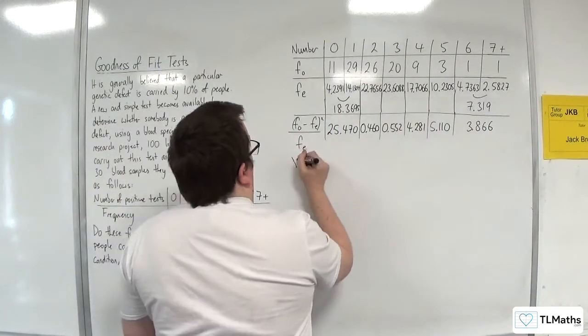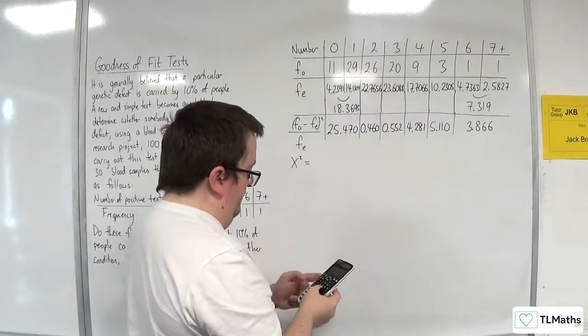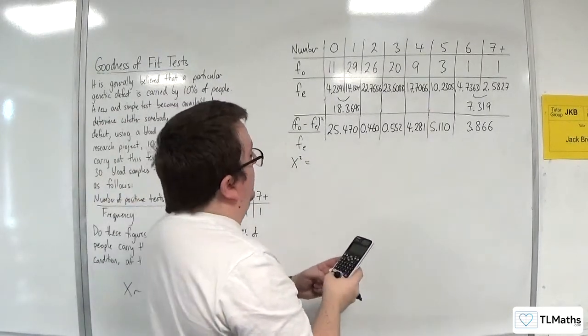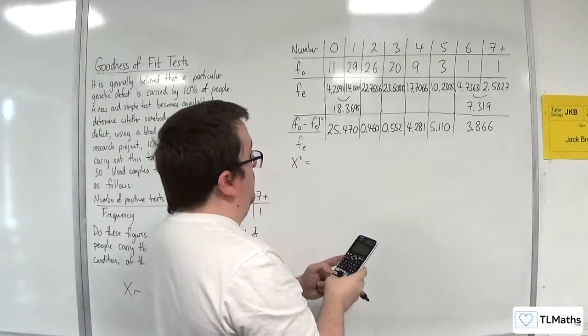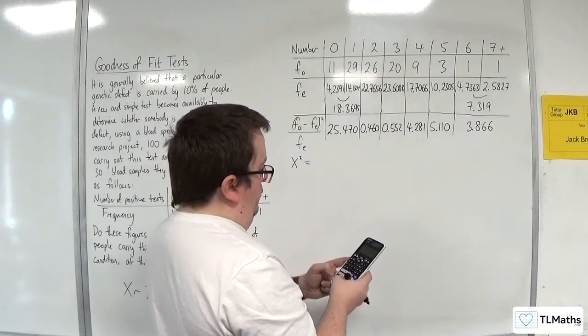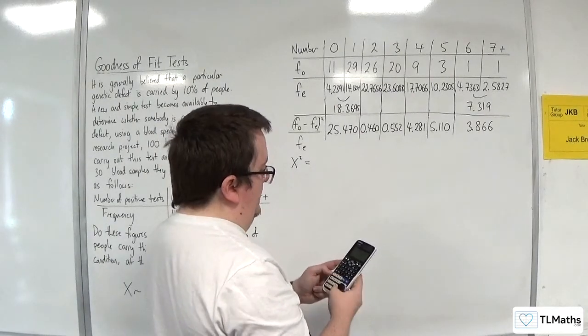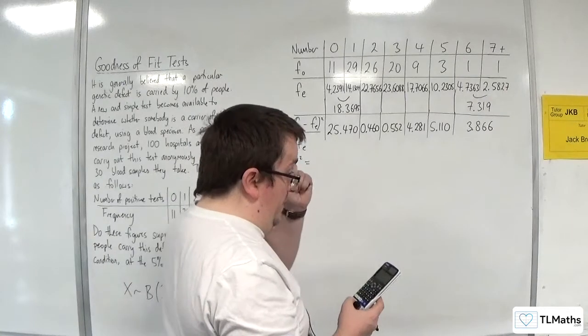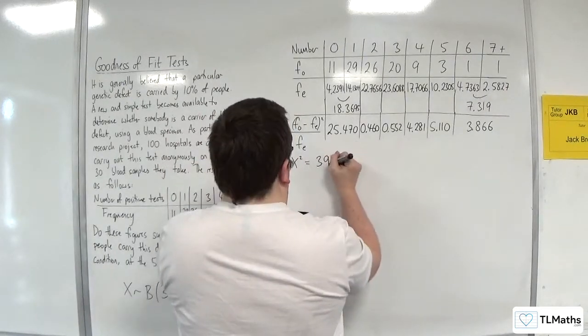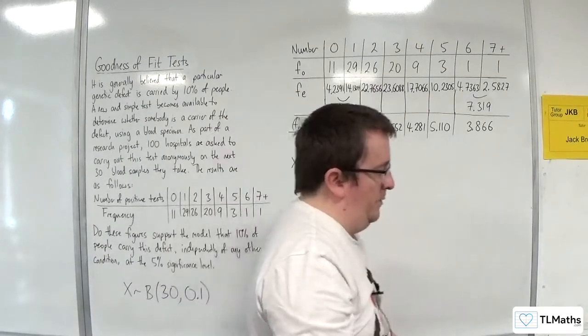So add all those together. 25.470 plus 0.460 plus 0.552 plus 4.281 plus 5.110 plus 3.860. And we get 39.739.